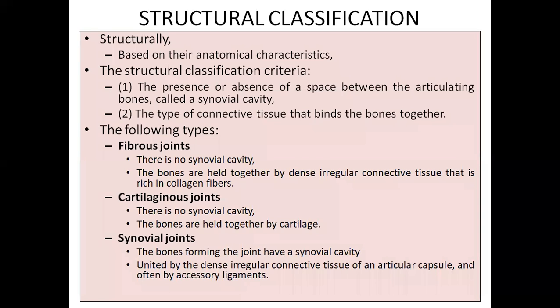We'll talk about structural classification first. In the structural classification, you can see three different types: one is called a fibrous joint, another one is called a cartilaginous joint, and the third one is called a synovial joint.